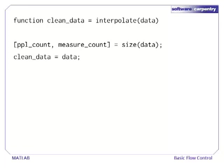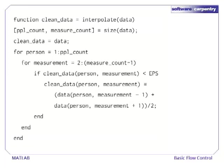We also make a copy of our data and call it clean_data. Since this variable has the same name as our return variable, it will be automatically returned at the end of the function. Next, we loop through each person. For each person, we loop through each measurement except the first and last. Those need special treatment with linear interpolation, and we leave them to an exercise.